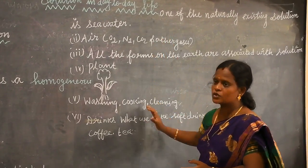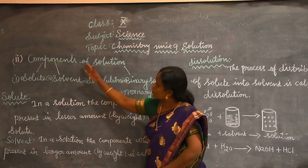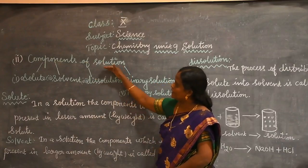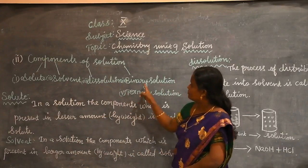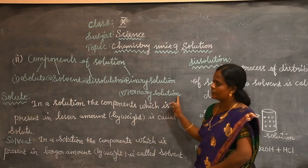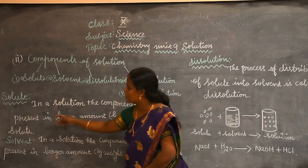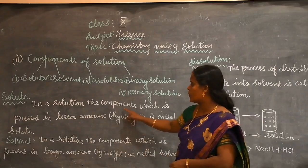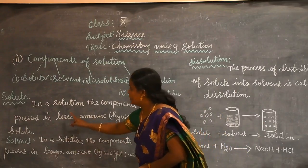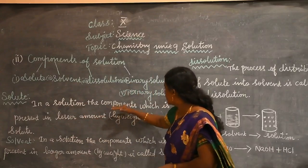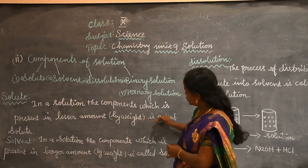Next, let us see the components of solutions. We have to see solute, solvent, dissolution, binary solution and ternary solution. First, let us see solute. What is meant by solute? In a solution, the component which is present in lesser amount by weight is called solute.